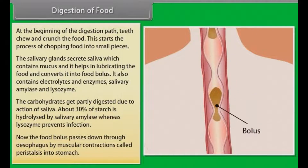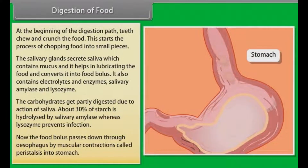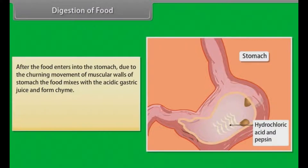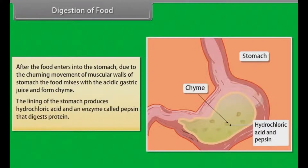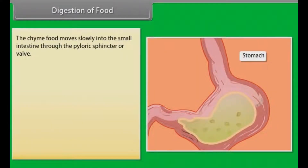The food bolus passes down through the esophagus by muscular contractions called peristalsis into the stomach. After the food enters the stomach, due to the churning movement of muscular walls of the stomach, the food mixes with the acidic gastric juice and forms chyme. The lining of the stomach produces hydrochloric acid and an enzyme called pepsin that digests protein. The chyme moves slowly into the small intestine through the pyloric sphincter or valve.